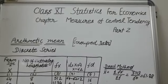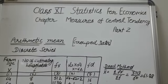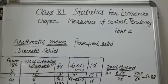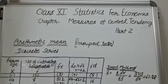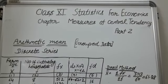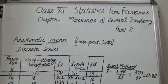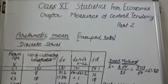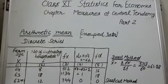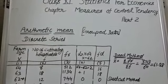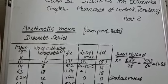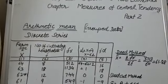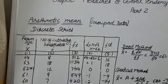Hello students. To continue with Statistics for Economics, Chapter Measures of Central Tendency Part 2. Today we are going to study calculation of arithmetic mean for grouped data.